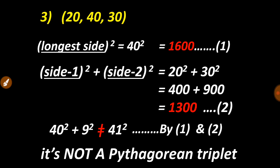I hope you have understood. Don't forget that this includes two steps. First step: find the square of longest side. Second step: find the sum of square of remaining two sides. If they are equal, they are Pythagorean triplet. If not equal, they are not Pythagorean triplet.